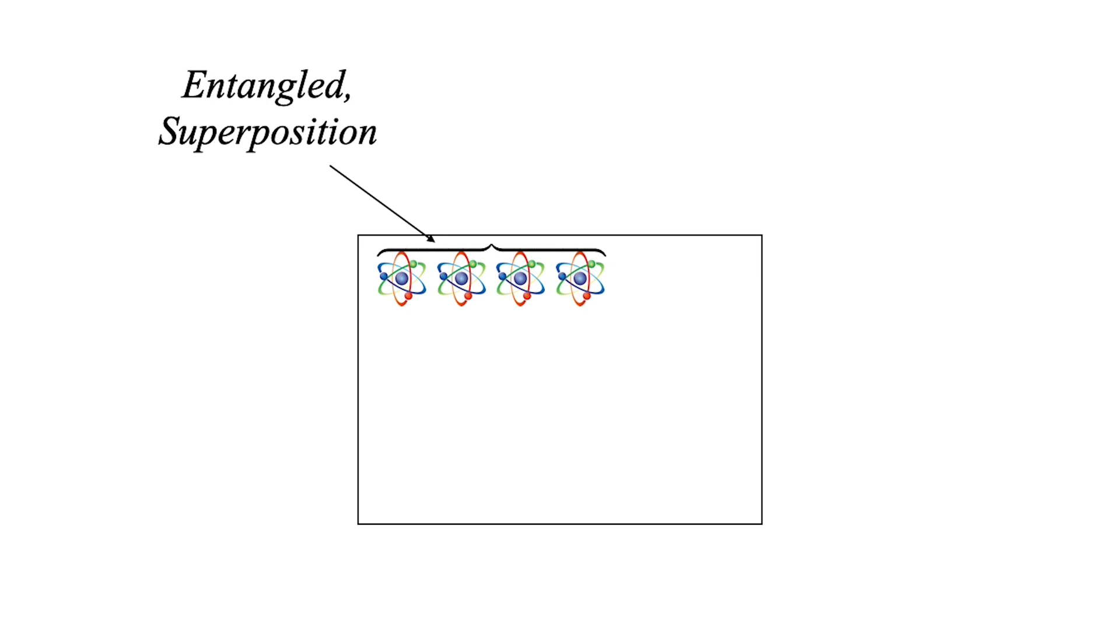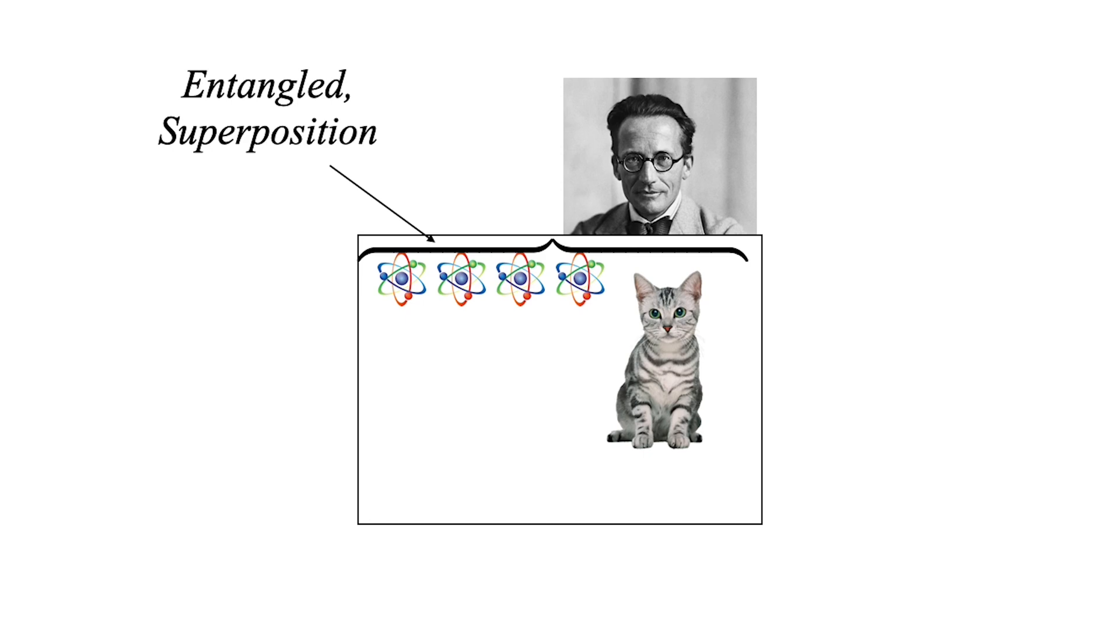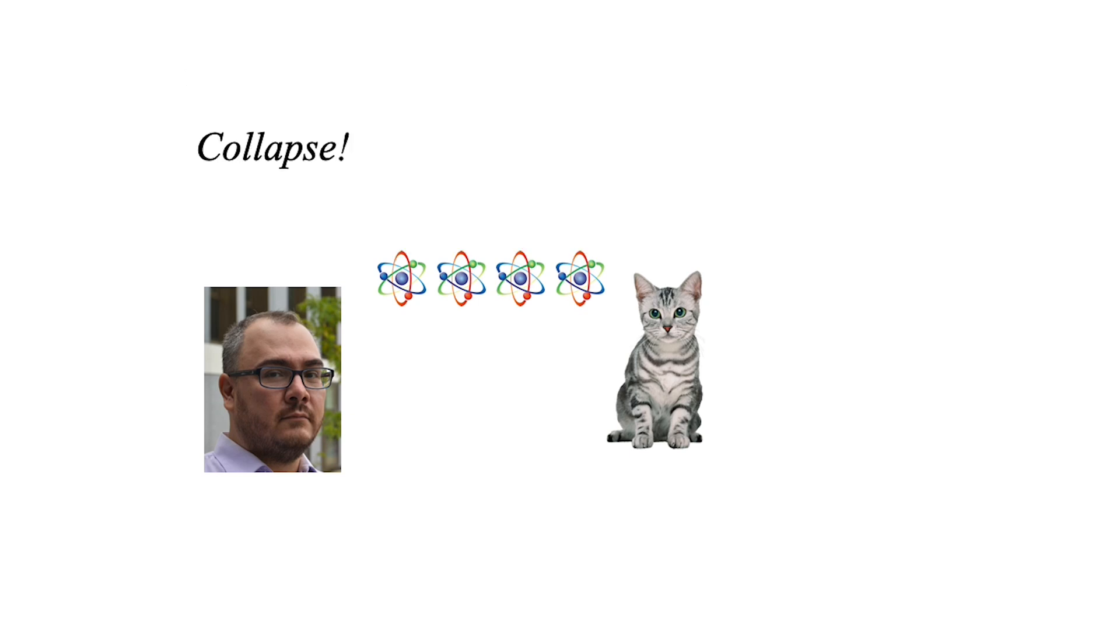Schrödinger comes along and notes that a cat is simply a collection of many atoms or many particles. So when the cat interacts with the atoms or particles in the box, now the cat is also in superposition. When a scientist comes along and opens the box and measures, then we create a collapse and the cat collapses to either dead or alive, along with the atoms and particles.